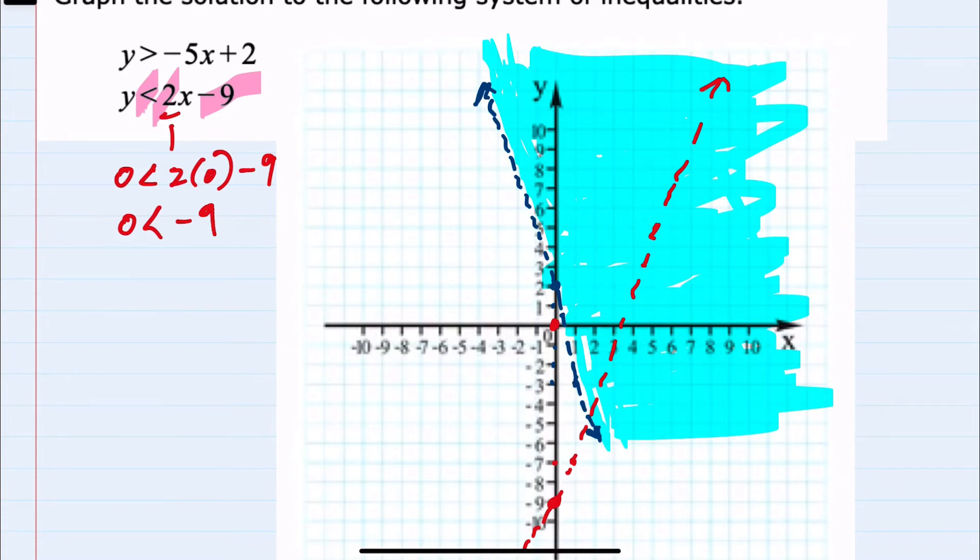Simplifying, we would have 0 < 2(0) - 9, which is 0 < -9. And again, I have a statement that's not true. 0 is not less than -9. Our test point failed. So I would want to shade everything on the opposite side of the test point. So here, everything to the right.